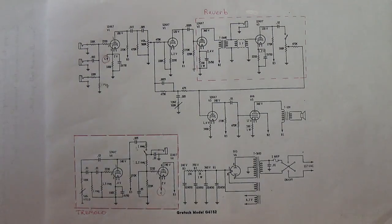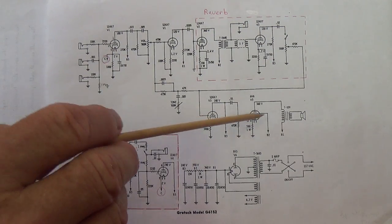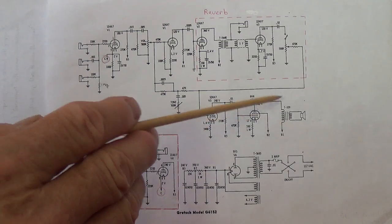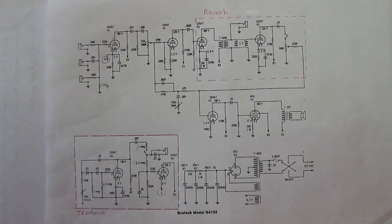So in effect this is very much like a Fender Champ circuit in which two triodes of a 12AX7 drive a 6V6 in a single output mode through, in the Champ's case, an 8-inch speaker, in this case a 10-inch speaker.